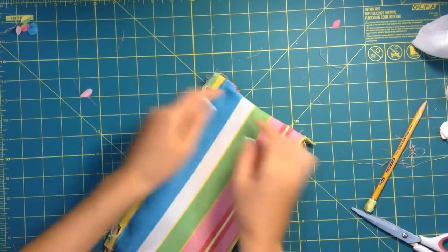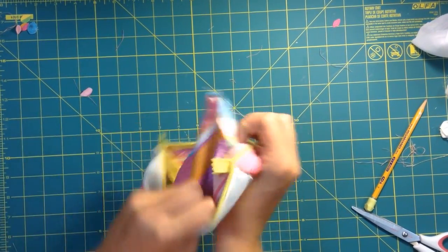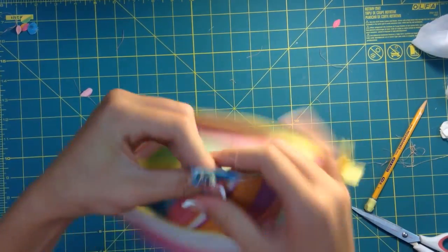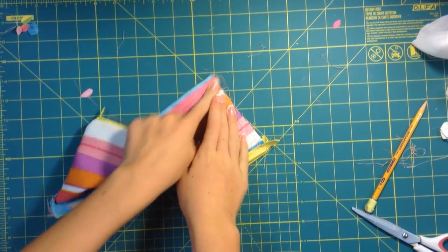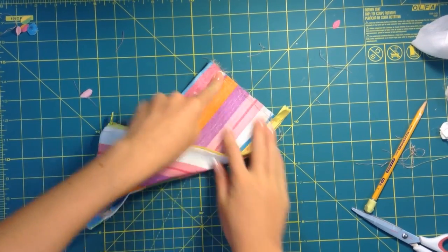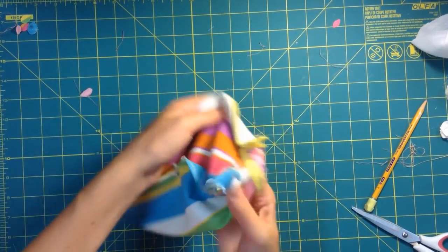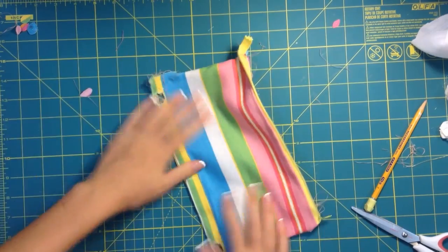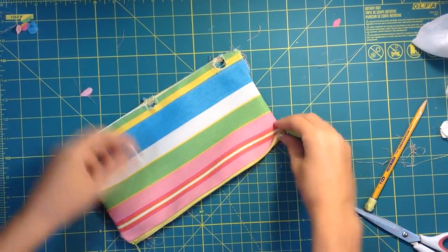So what I forgot to mention is you actually want to stop. Let me show you. The bulk is right here where the holes are. You want to stop sewing right before then. And you flip it out. It should come out like something like this.